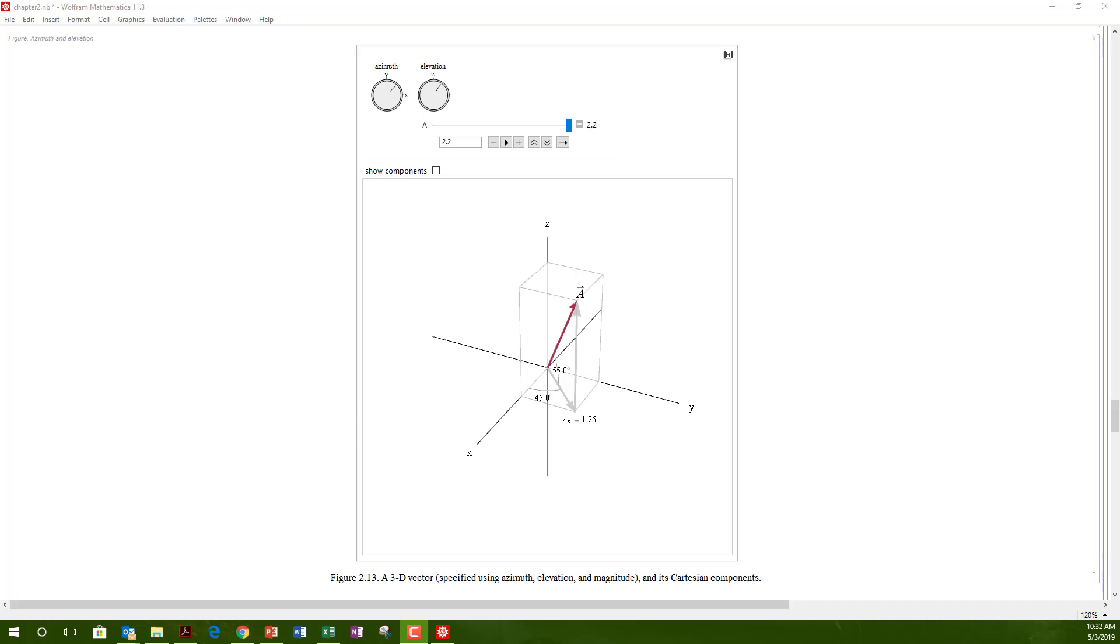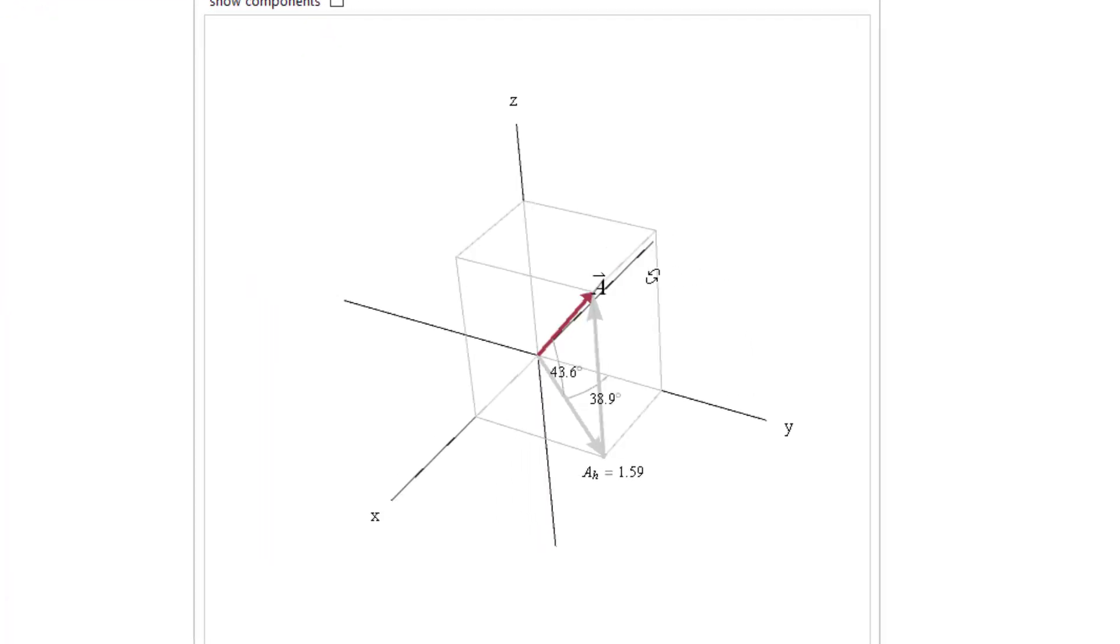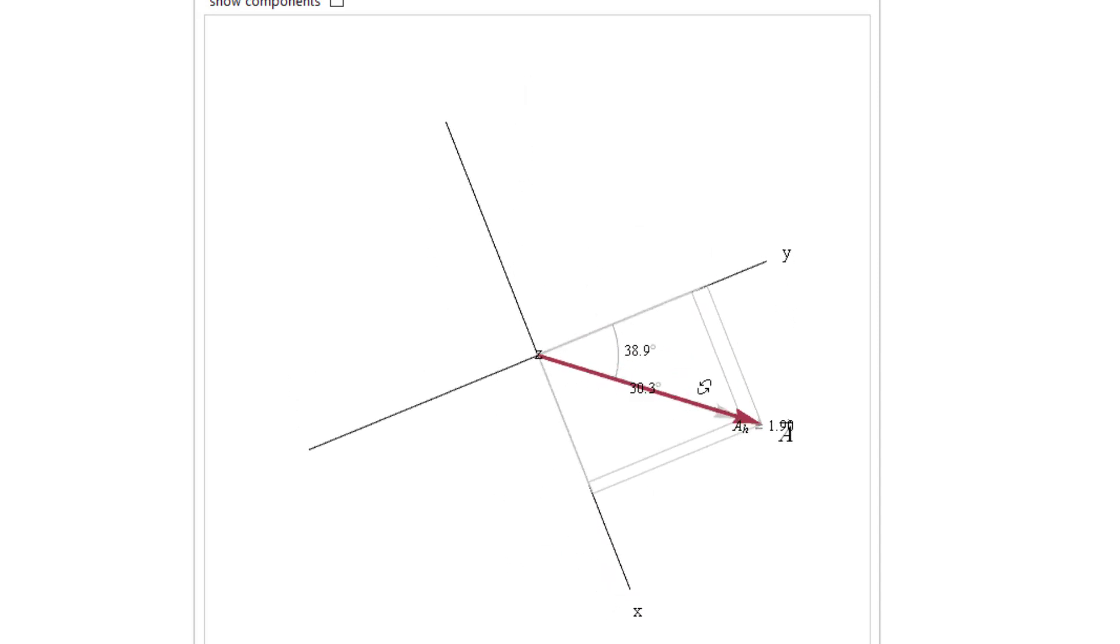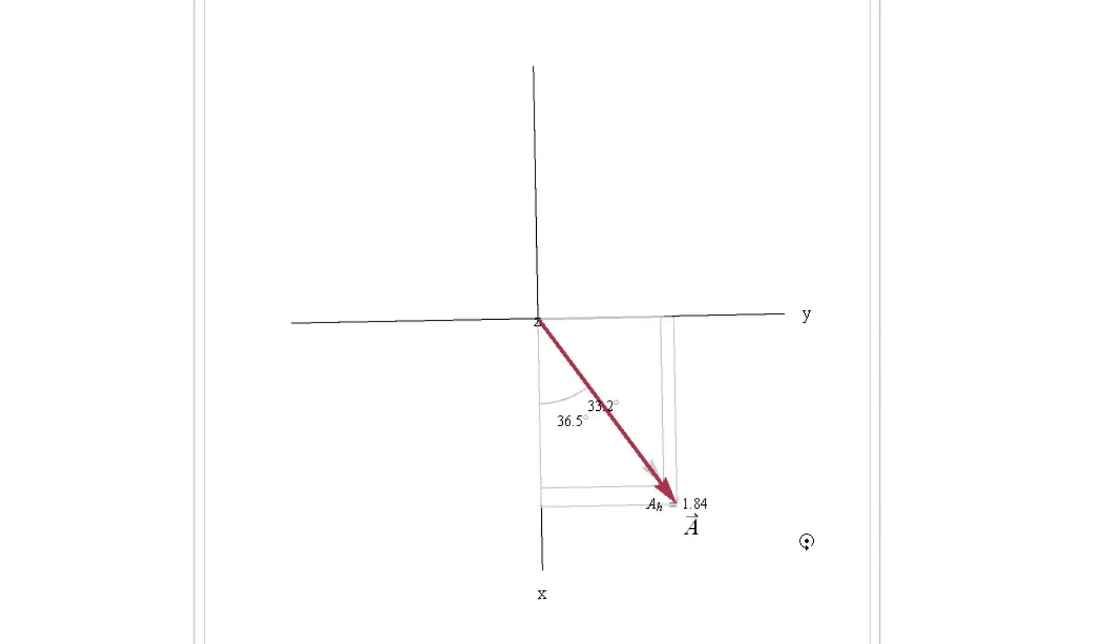Here is a dynamic figure of a three-dimensional vector that you have access to through the course materials. This figure allows you to adjust the vector magnitude and the azimuth and elevation angles. Then rotate the image for visualizing the vector in three-dimensional space. Note that when I view the vector in an aerial view directly above, aligned with the z-axis, I can see the angle theta that is acting in the horizontal plane.